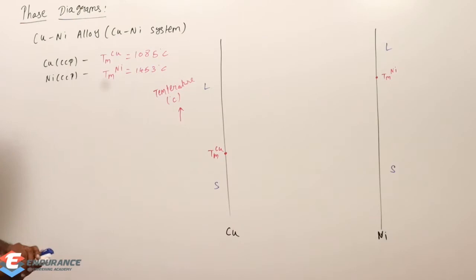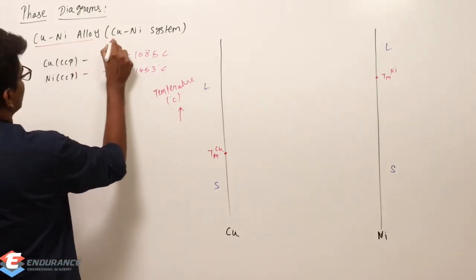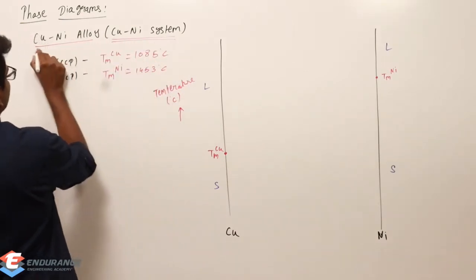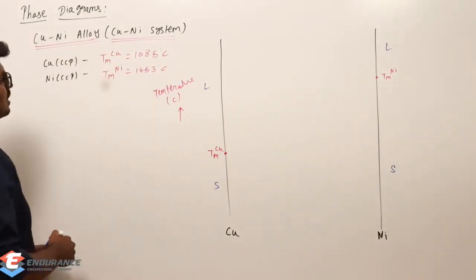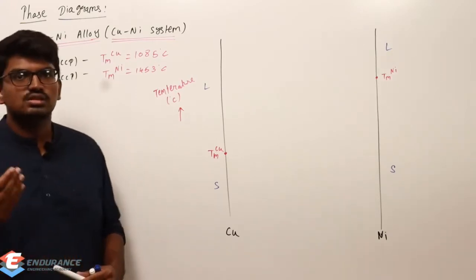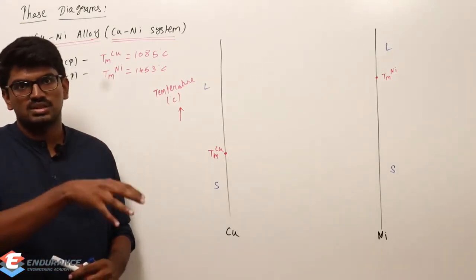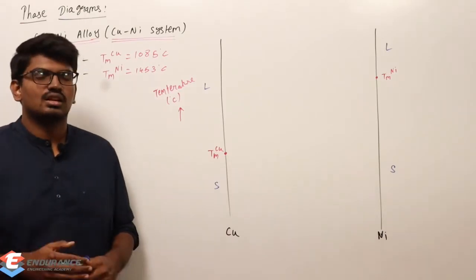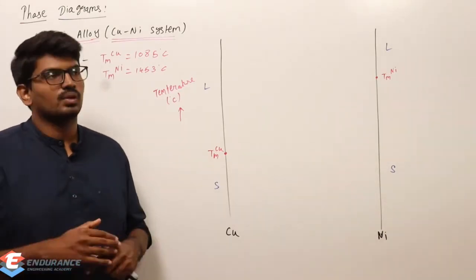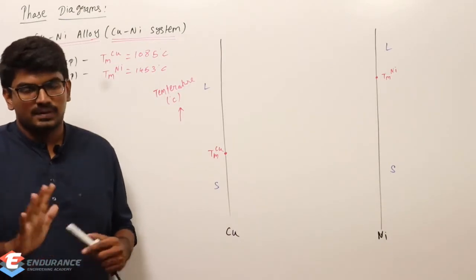Let me start with a copper-nickel alloy or a copper-nickel system. This is a substitutional solid solution — copper will be substituted in place of nickel. We already know what is meant by substitutional solid solution from the previous videos.